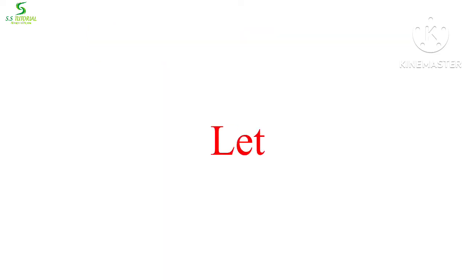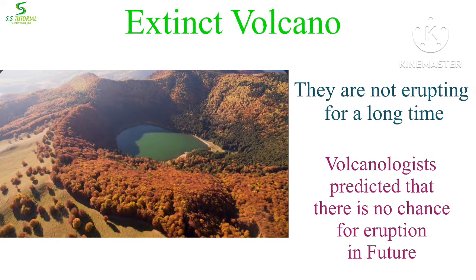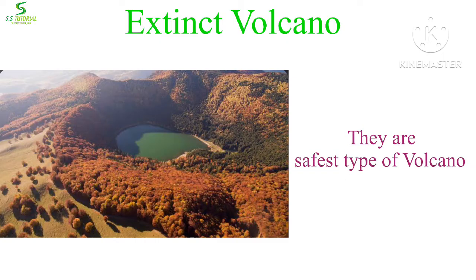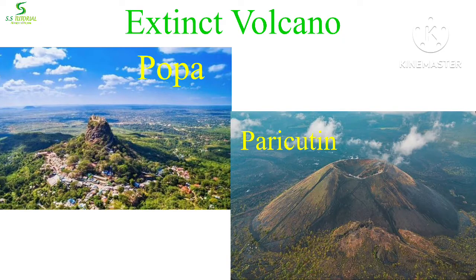Extinct volcanoes are those which have not erupted for a long time and volcanologists predict there is no chance of any volcanic activity in the future. This type of volcano is the safest on Earth. Popa in Myanmar and Paricutin in Mexico are examples of extinct volcanoes.